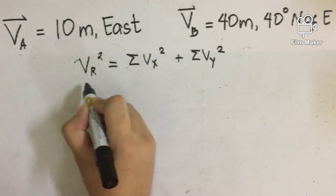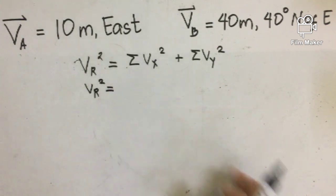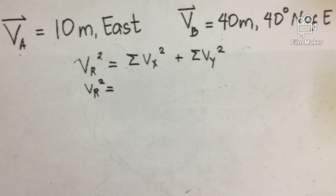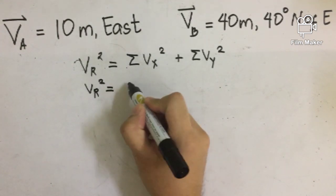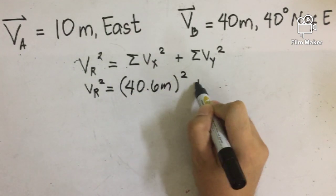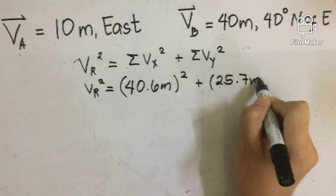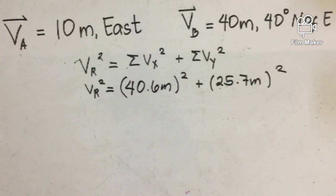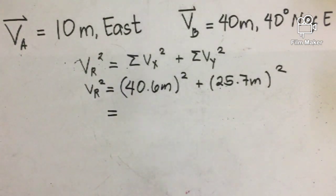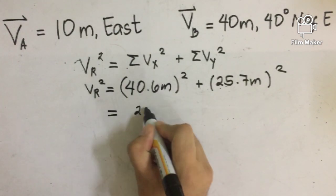Our resultant vector R, which is equal to an unknown, is found using the sum of all x's and the sum of all y's. The sum of all x is equal to 40.6 meters, and the sum of all y's is equal to 25.7 meters. Squaring those individual x and y component sums, we will arrive at a value that sums up to